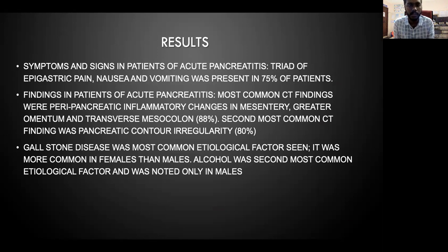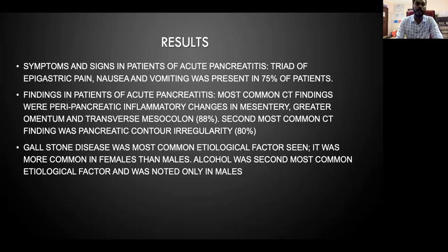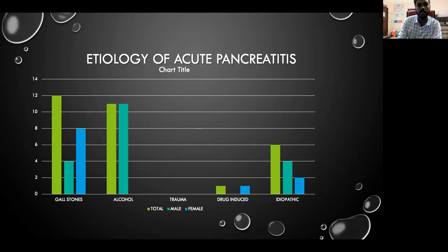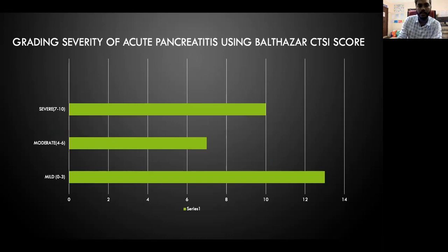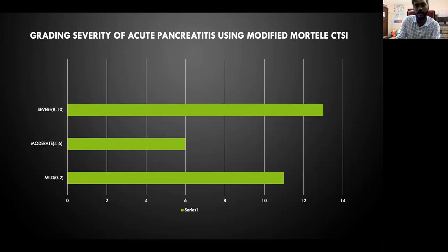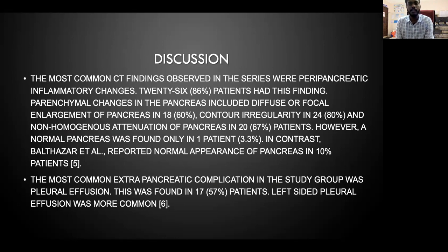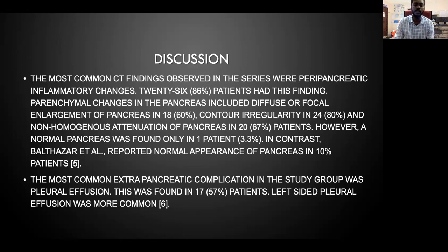The most common symptoms and signs in patients with acute pancreatitis were epigastric pain, nausea, and vomiting, seen in 75% of patients. The most common CT finding was pancreatic contour irregularity. Gallstone was the most common etiological factor, and alcohol was the second most common etiological factor, seen only in males. The most common CT finding in the series was peripancreatic inflammatory changes, present in 26 patients. Parenchymal changes including diffuse or focal enlargement occurred in 18 patients, contour irregularity in 24, and non-homogeneous enhancement of the pancreas in 20 patients. The most common extra-pancreatic complication was pleural effusion, more common on the left side.